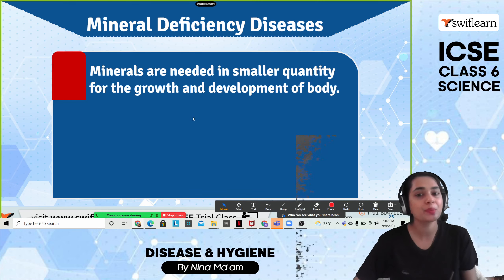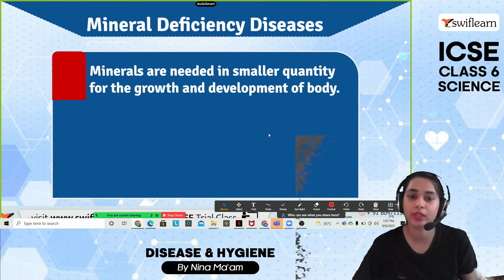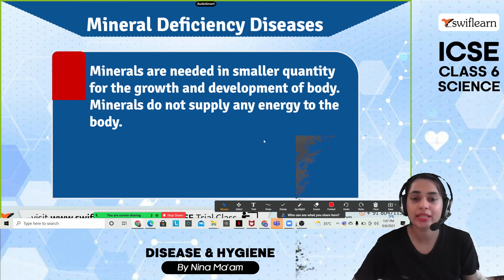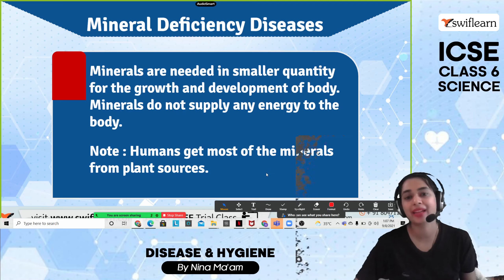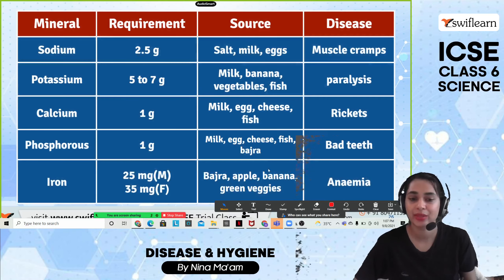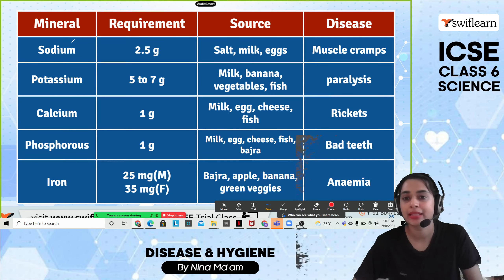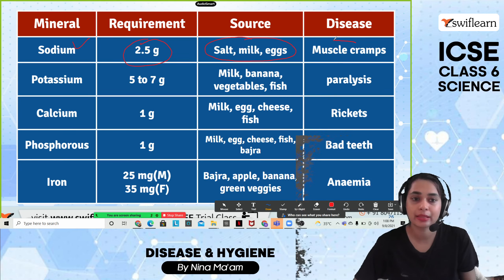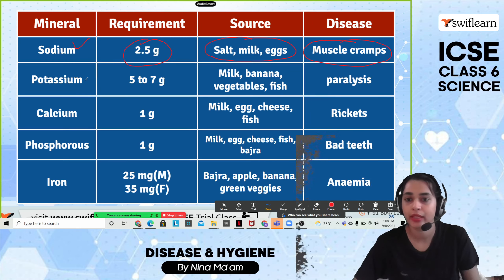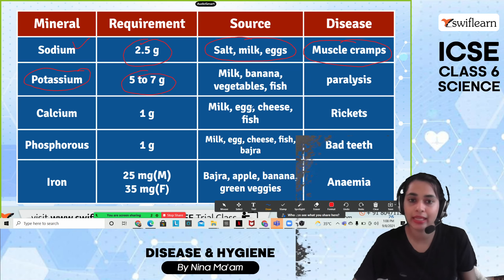Now, mineral deficiency diseases. Minerals are needed in smaller quantities for growth and development of the body, and unlike nutrients, they do not supply energy. Humans get most minerals from plant resources. Important minerals include: sodium — requirement 2.5 grams, sources are salt, milk, and eggs, deficiency causes muscle cramps. Potassium — 5 to 7 grams daily, found in milk, banana, vegetables, and fish.